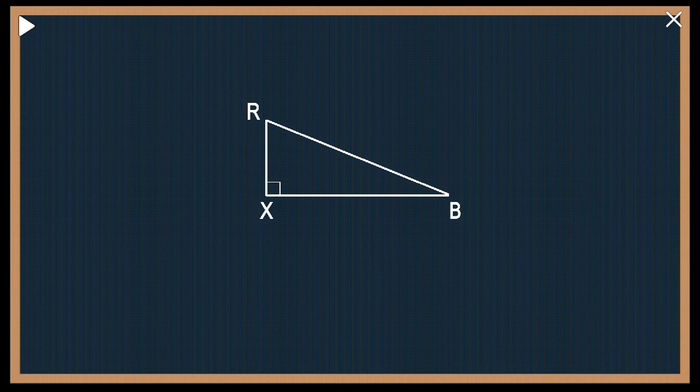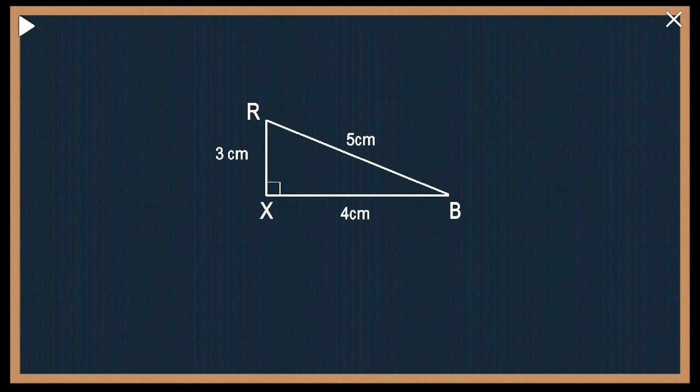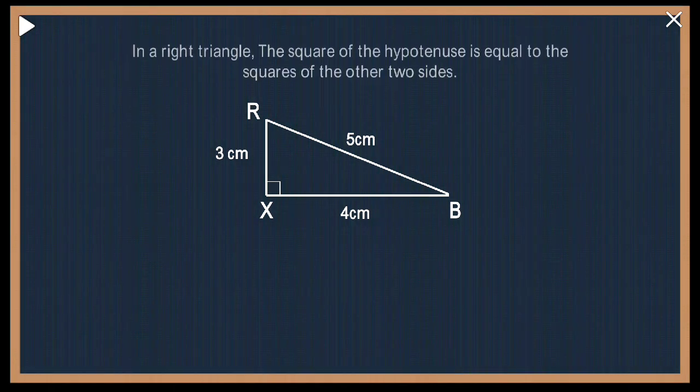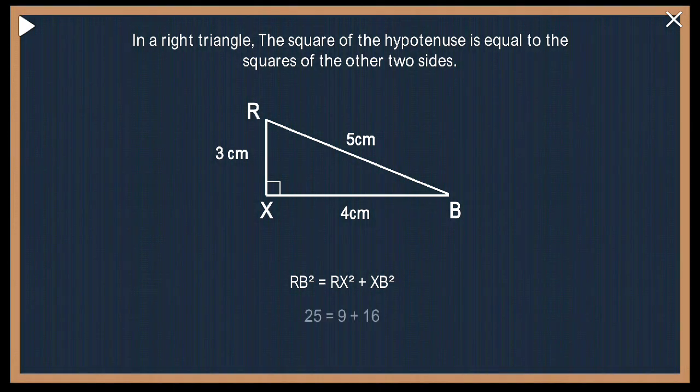RX and XB are some other sides. So I'll give them some measurements also. RB is 5, RX is 3, and XB is 4. So Pythagoras said in a right angle triangle, the square of the hypotenuse is equal to the square of the other two sides. Now here my hypotenuse is RB. So square of that will be—I have written the statement first, whatever the entire sentence is written in form of this symbol. So RB² equals RX² plus XB².